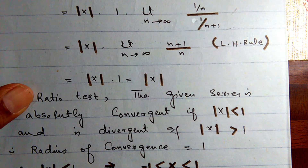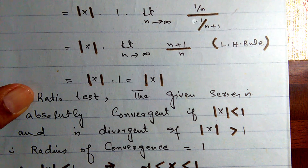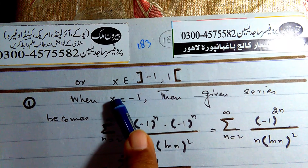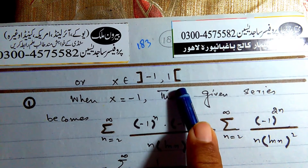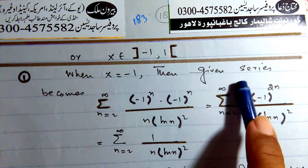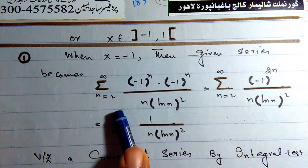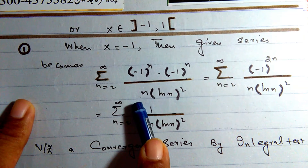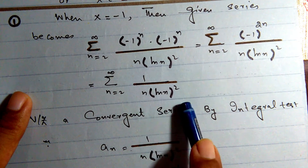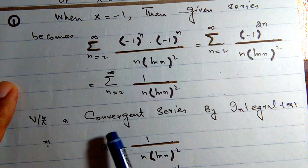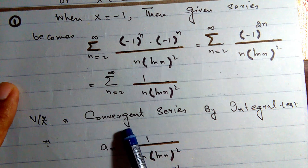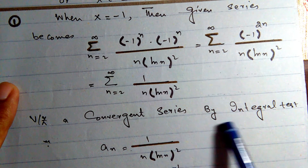|x| < 1 means x belongs to the open interval (-1, 1). We now check x = -1: the series becomes summation 1/(n · ln n), which we test using the integral test.